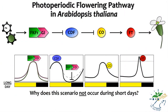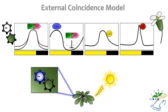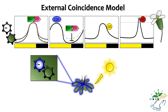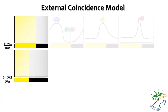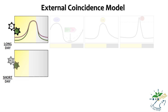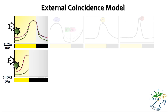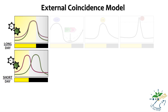Why does this scenario not occur during short days? What about the need for coincidence between the clock and light signaling — the external coincidence model? To understand, let's compare what happens under long day versus short day conditions. The light signal resets the clock every day, conferring a 24-hour rhythm no matter the season. But due to the change in photoperiod throughout the year, the cycling profiles of protein quantities vary. During a long day, the expression of FKF1 and GI is synchronized, resulting in high quantities of the FKF1-GI complex. But during a short day, their expression is desynchronized; because the protein ratio is unbalanced, not much of the FKF1-GI complex can form.